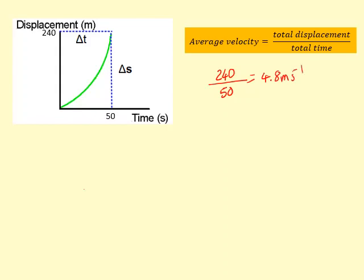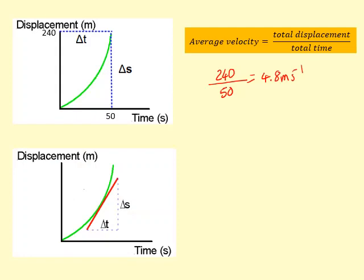Of course, at the very beginning he must be moving much more slowly and at the very end he must be moving much more quickly. But how do we work out the speed at any point in time?